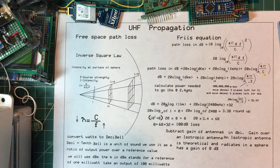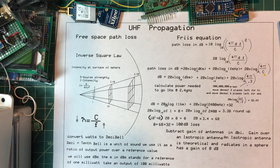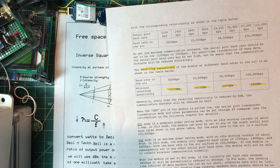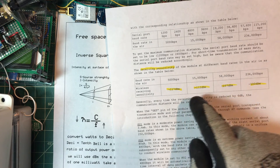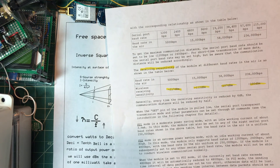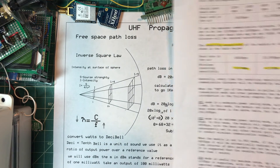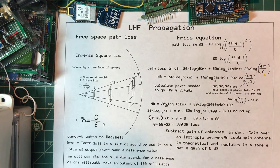We're going to lose 100 dB getting there, so our RSSI at the site will be minus 80 dBm. We started with 20 dBm and lost 100, so it's minus 80. Looking at the HC12 spec sheet, it's sensitive down to minus 107 or even minus 117 dBm depending on baud rate. We're at minus 80 — we're within spec, it's going to work.